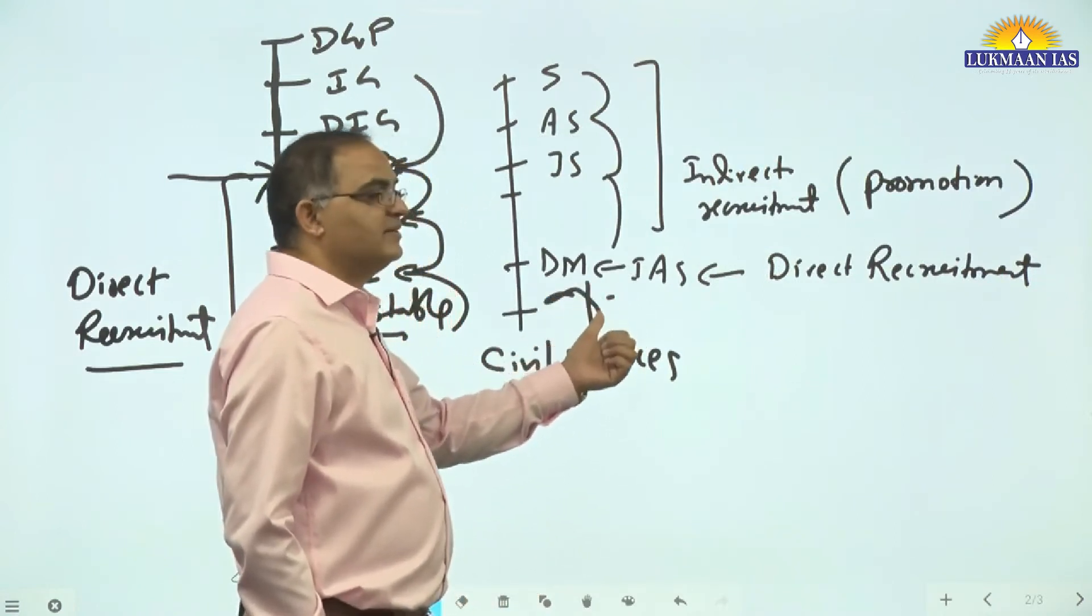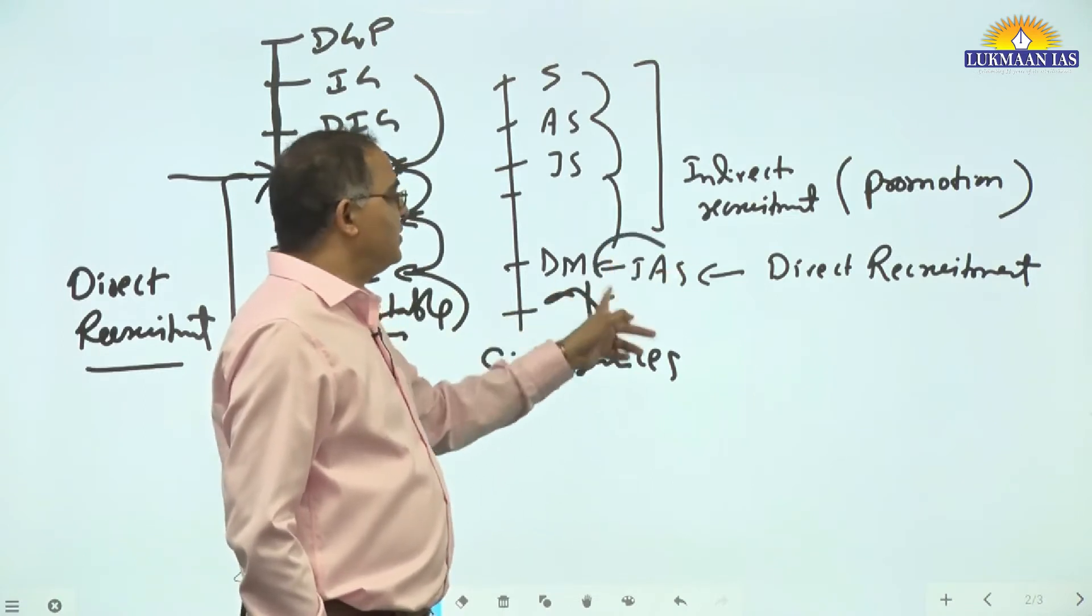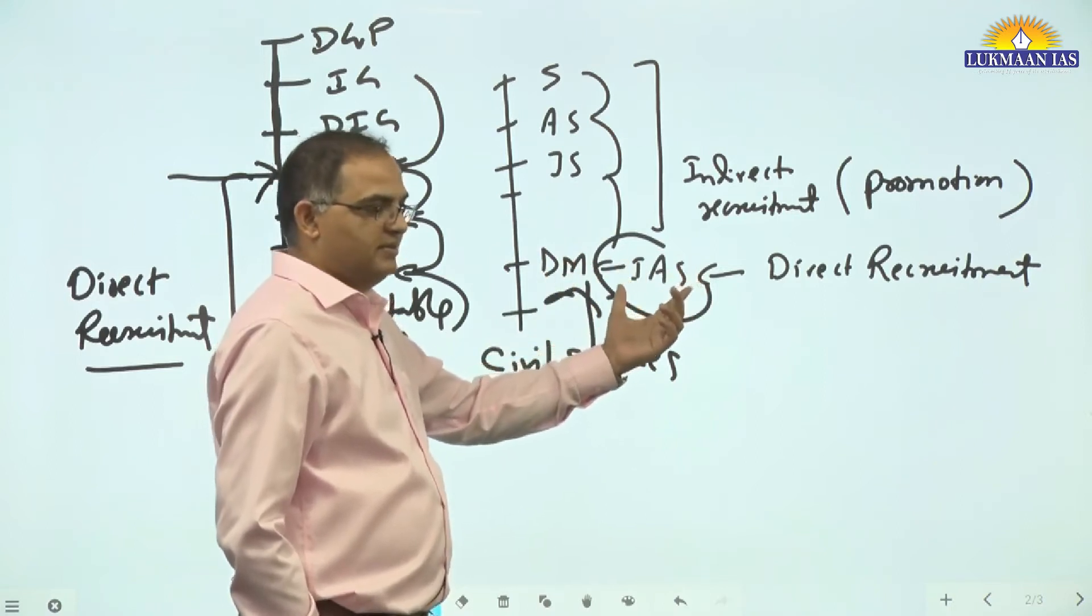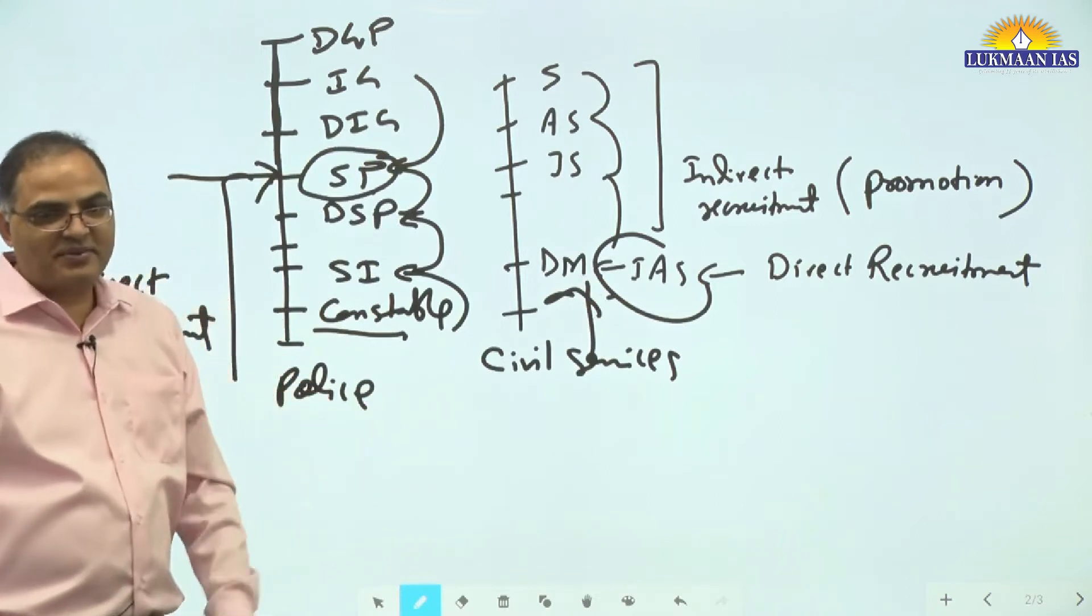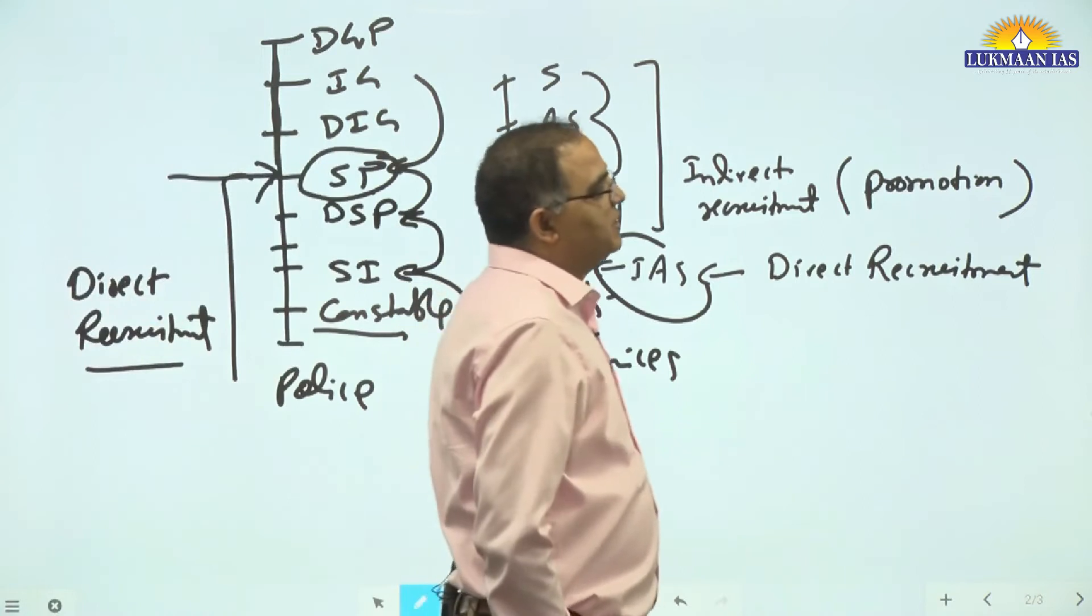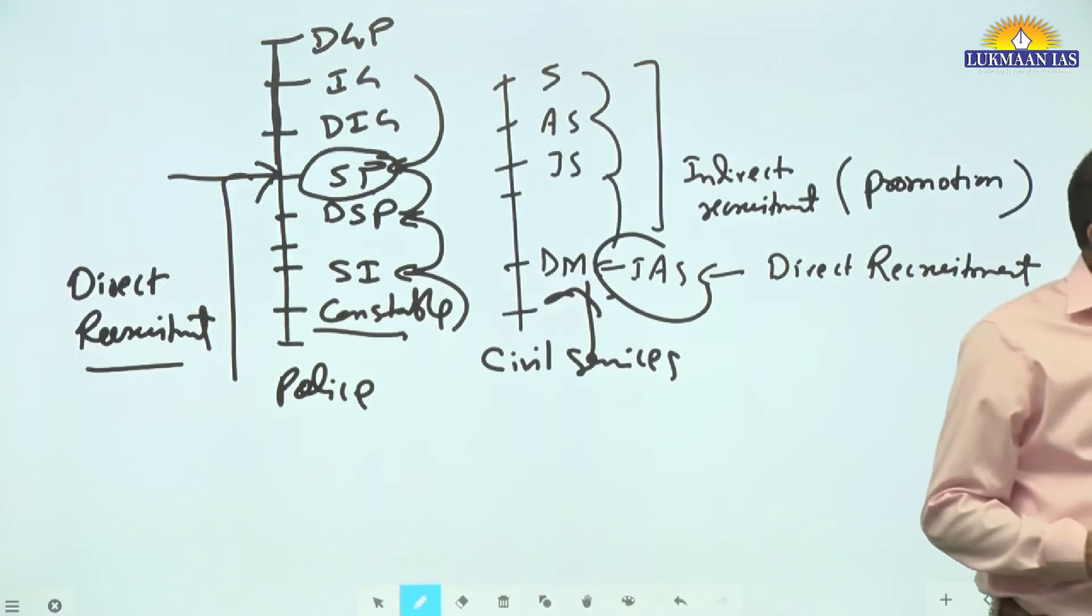The advantage is that he is a young person. The disadvantage is that he does not have experience. Both advantages and disadvantages are there. That's why there should be a right match, a blend of both. We should have direct recruitment also and indirect recruitment also.